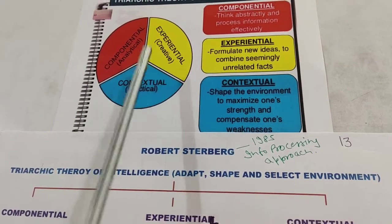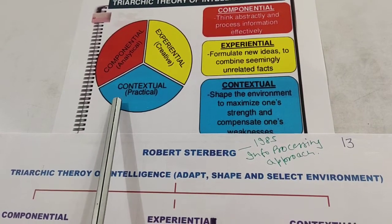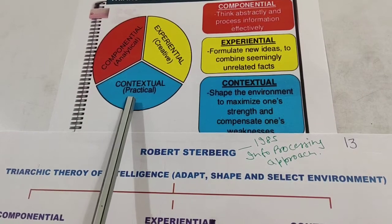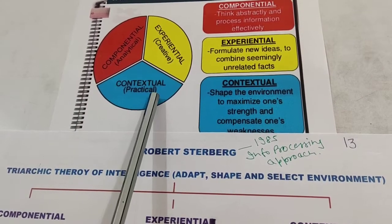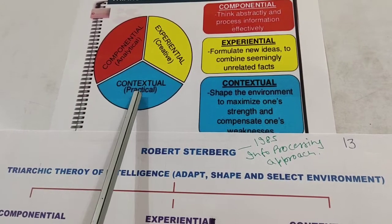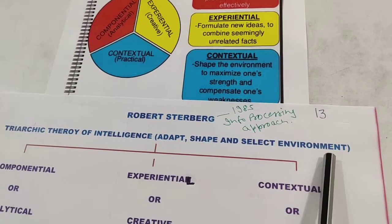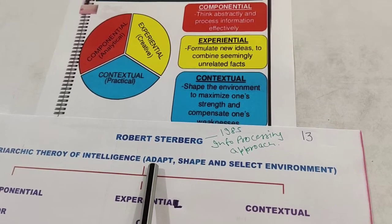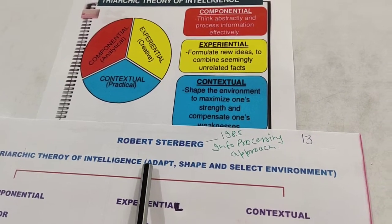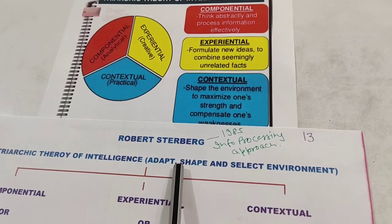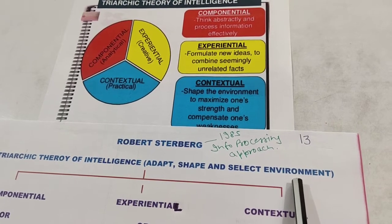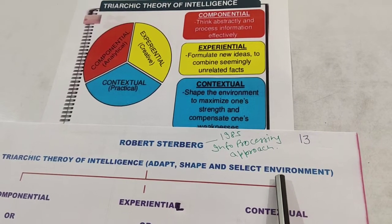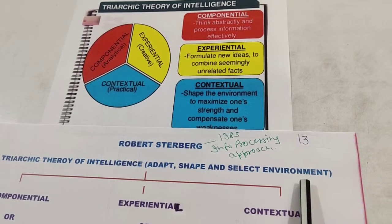The three types are: componential, experiential, and contextual. According to Robert Sternberg, these three types of intelligence are present in each individual but are different from each other. He also gave an important definition: intelligence means to adapt, shape, and select the environment — to adapt, change, or choose a better environment in order to achieve your goals.